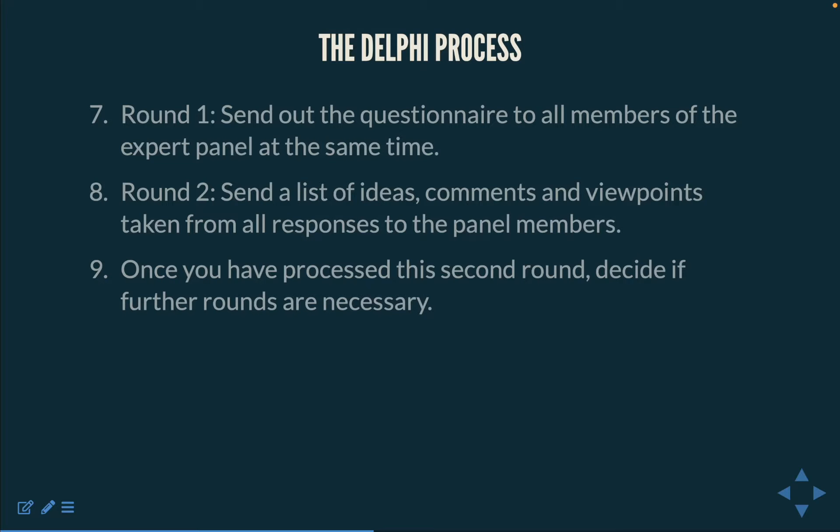Step 7 — Round 1: Send out a questionnaire to all members of the expert panel at the same time. Step 8: Collate and summarize the responses and return them to all panel members. In a traditional Delphi study, this initial questionnaire will usually consist of a small number of open-ended questions, with the purpose of encouraging the panel to present their reaction in a detailed and descriptive narrative.